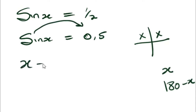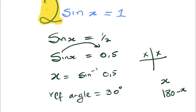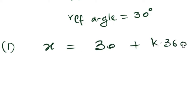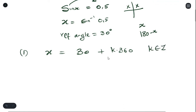To get the reference angle, we move sine over: x = arcsin(0.5). Putting this in the calculator gives us 30 degrees. Whenever you're working with sine, you always end your answer with k360. So the first answer is x = 30 + k360, where k is an element of integers.